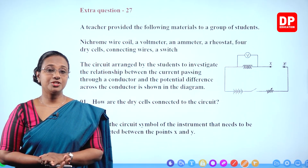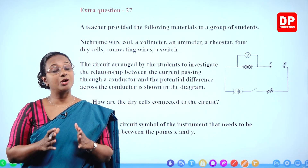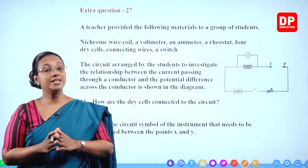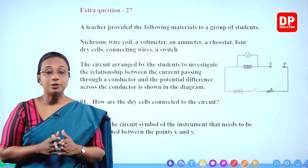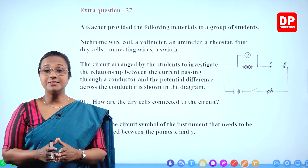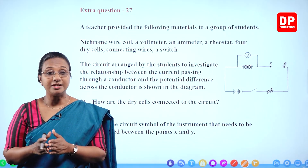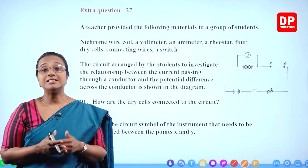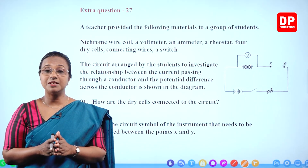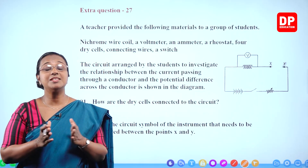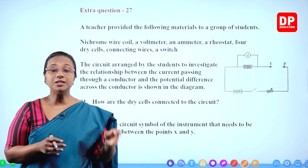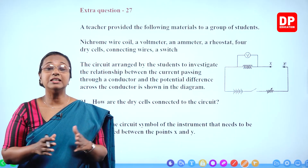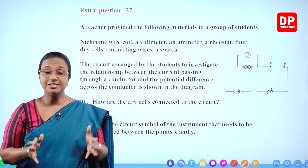Today I'm going to continue the extra questions related to current electricity. We discussed what static electricity and current electricity are, then current electricity in detail — the different quantities: electromotive force, potential energy, current, resistance, and the relationship between potential energy and current at constant temperature, which is Ohm's law. From that we get the constant — the ratio between potential energy and current at constant temperature — which is the resistance, the ability of a conductor to oppose the flow of current.